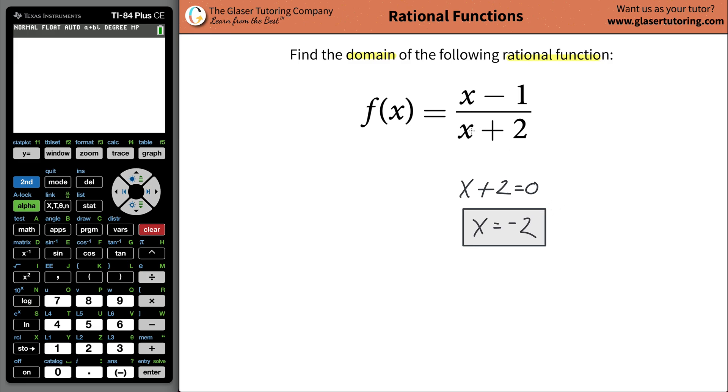So if you plug in a negative 2 value here for x, the denominator becomes 0. That's a problem because you cannot divide by 0. You can't do it. All right? So this is what I call a domain restriction. And that's really the only restriction.